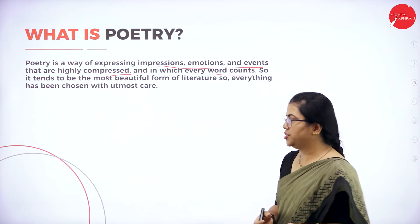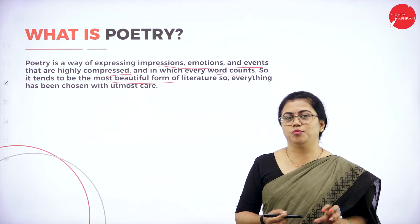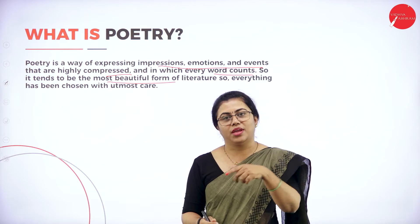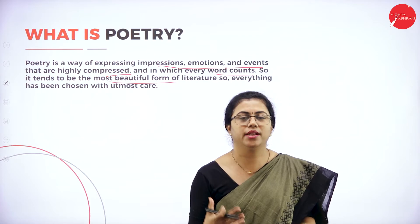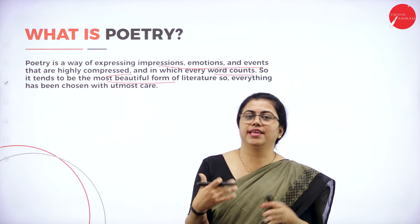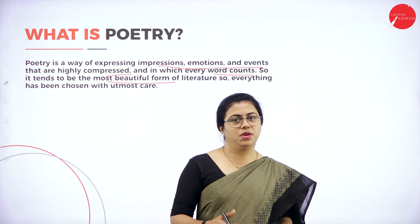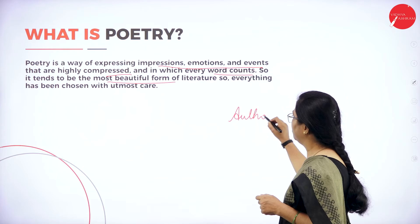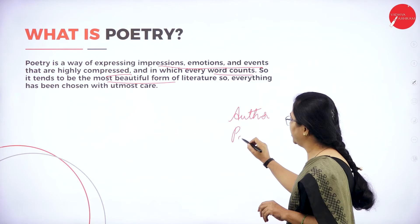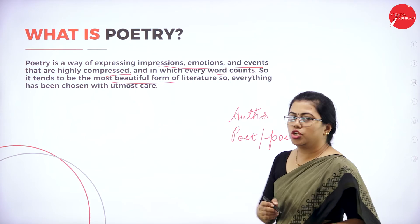Poems are considered the most beautiful form of literature because you can add a tune and even sing along with poetry — you cannot do that with prose. Words chosen by the poet are chosen with utmost care because in a poem the word count is limited; he has to be very careful. Whoever writes prose — for example, a novel — is called an author, but a person who writes a poem is called a poet, or a poetess if it is a lady. That is the difference between prose and poetry.